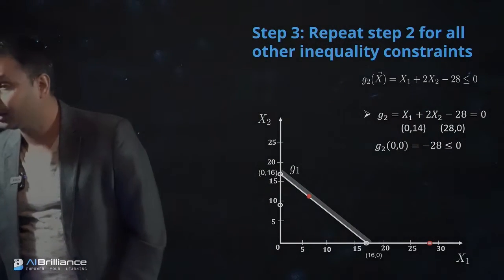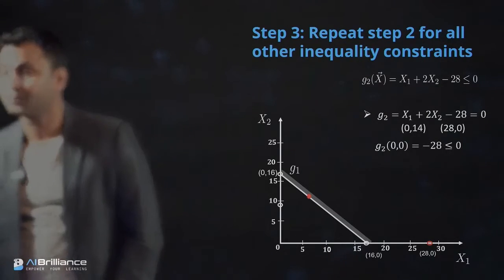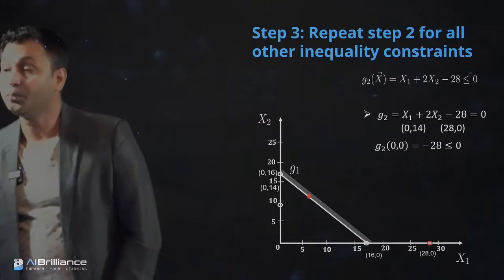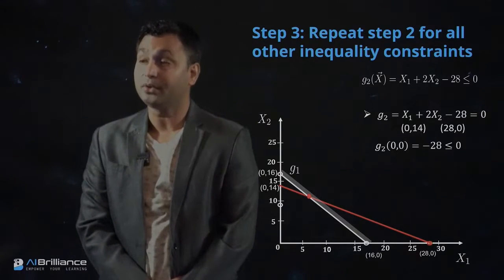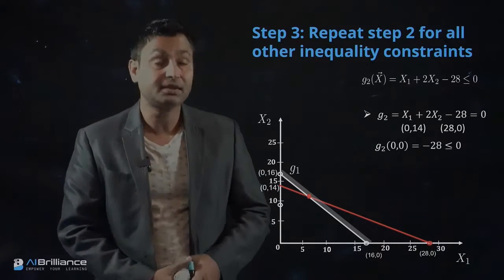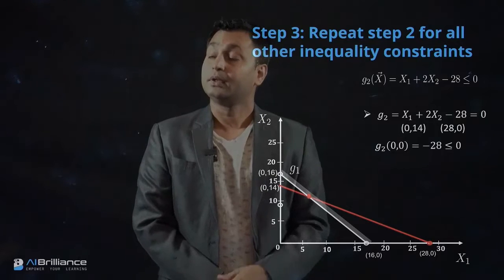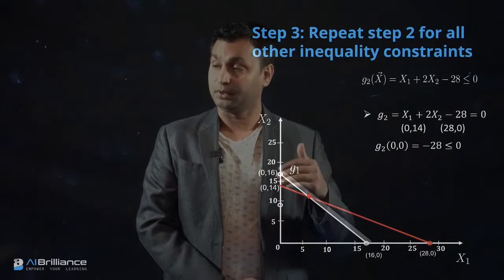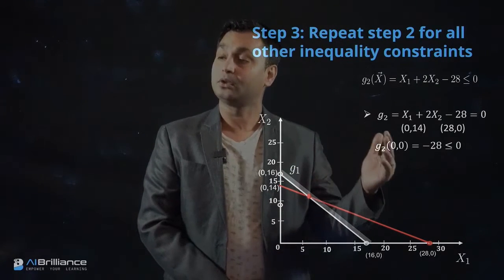Using these two points, (28, 0) and (0, 14), we connect them to plot the line representing the boundary of the G2 constraint. Since this is an inequality constraint, we need to determine which side of the line results in feasibility and which side is infeasible — and which region should be shaded out.